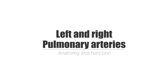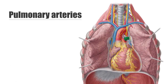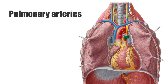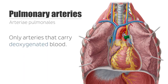The pulmonary arteries, highlighted here in green and seen from the anterior view. The trick to understanding the pulmonary arteries is recognizing that they are the only arteries that carry deoxygenated blood.